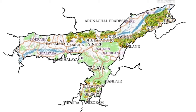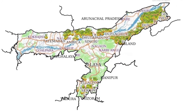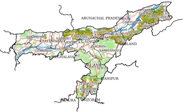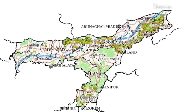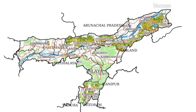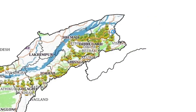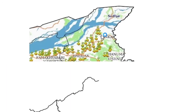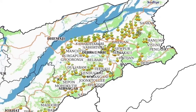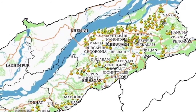Now students, let us see the main tea growing areas of Assam. First we will go to the southern part of the river Brahmaputra. We can see that in these areas the density of tea growing is very high — the districts of Tinsukia, Dibrugarh, Sivsagar, and Jorhat up to Golaghat.